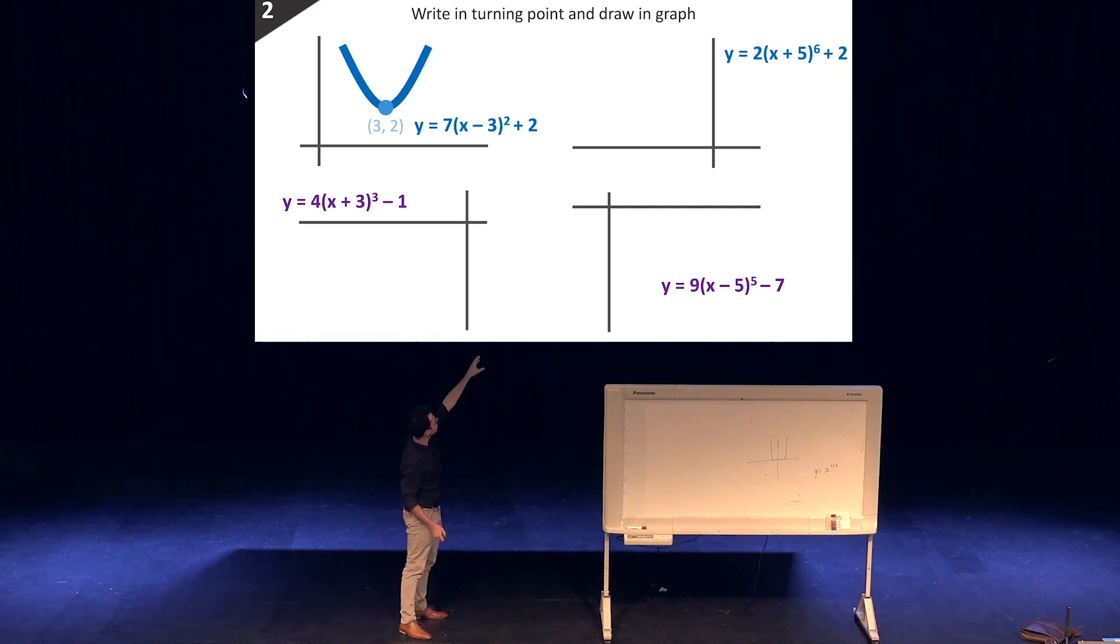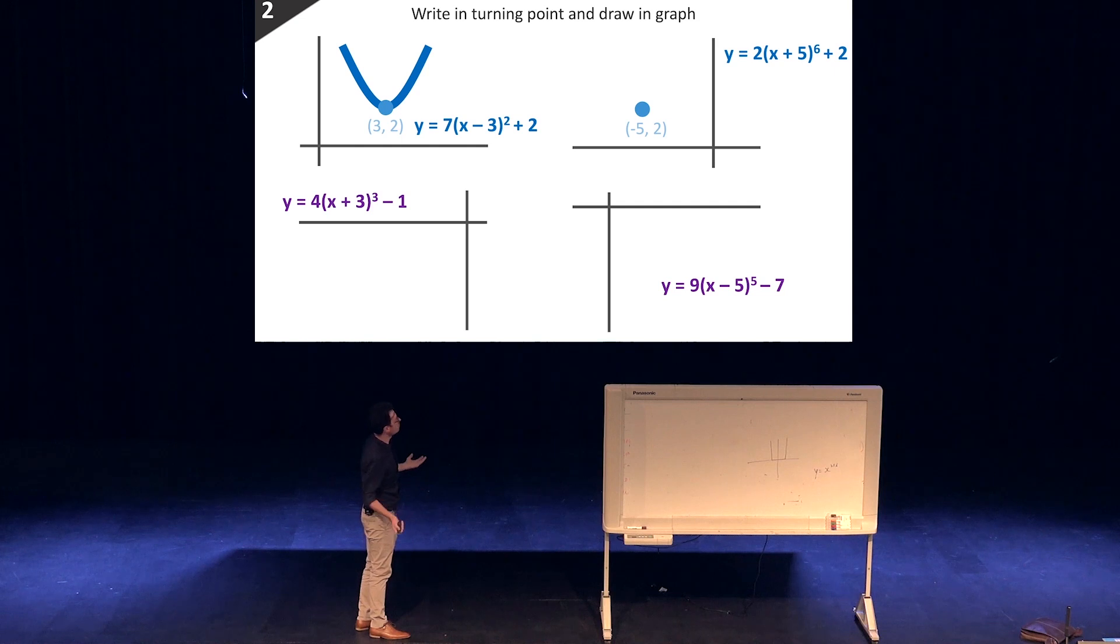Here I've got y = 2(x + 5)^6 + 2, I think that is. So that's (-5, 2). And then because it's to the power of 6, basically a parabola, and chuck that in.